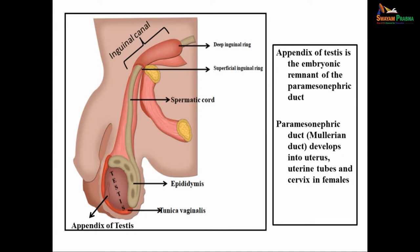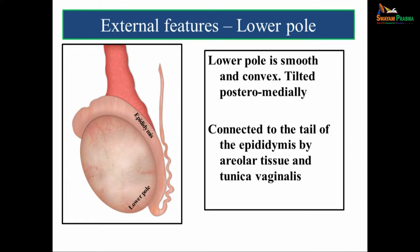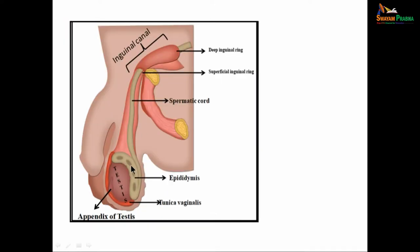The lower pole is smooth and convex. It is tilted posteromedially and is connected to the tail of the epididymis by areolar tissue and tunica vaginalis.